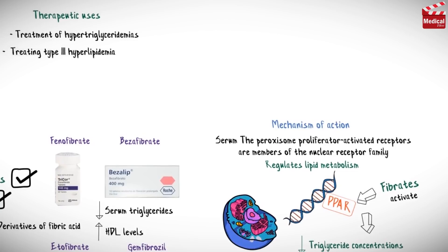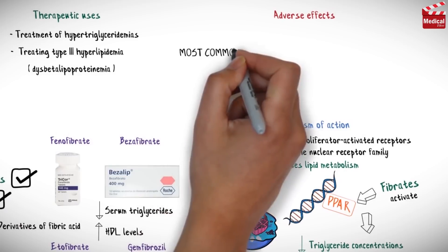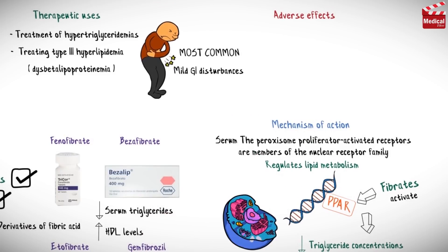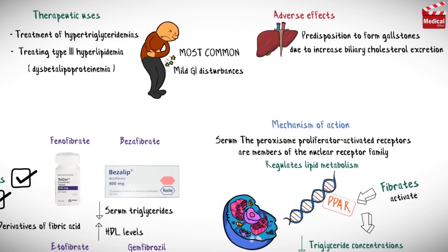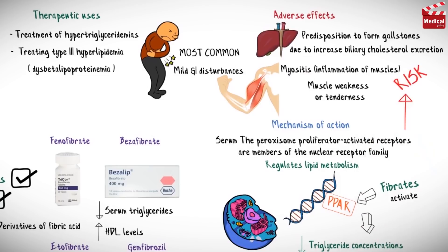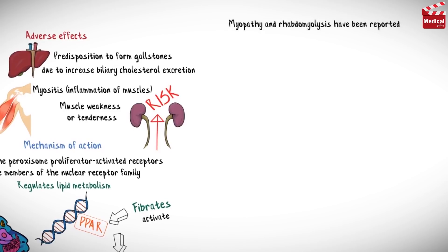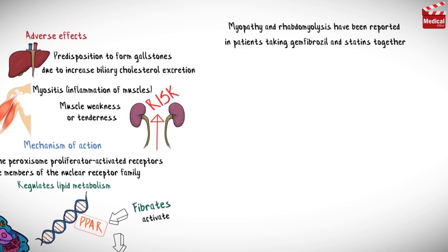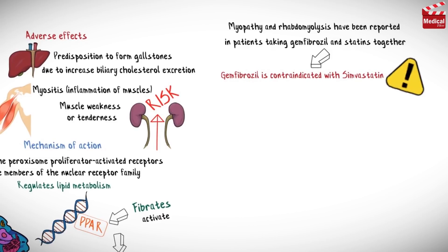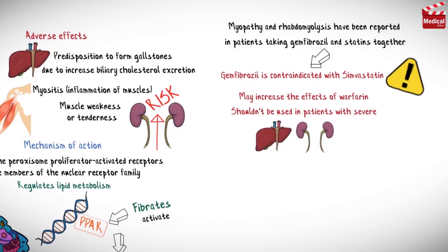Fibrates are useful in treating type 3 hyperlipidemia, known as dysbetalipoproteinemia. The most common adverse effects are mild gastrointestinal disturbances. There is also a predisposition to form gallstones due to increased biliary cholesterol excretion. Myositis (muscle weakness or tenderness) may occur, and the risk may be increased in patients with renal insufficiency. Myopathy and rhabdomyolysis have been reported in patients taking gemfibrozil and statins together, so the use of gemfibrozil is contraindicated with simvastatin. These agents may increase the effects of warfarin and should not be used in patients with severe hepatic or renal dysfunction or pre-existing gallbladder disease.